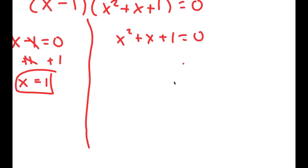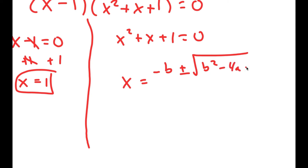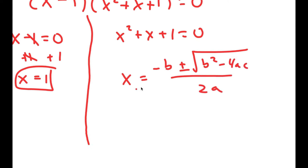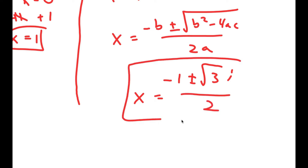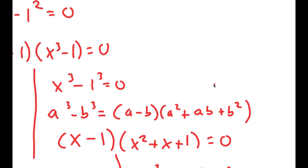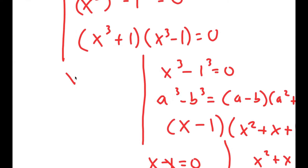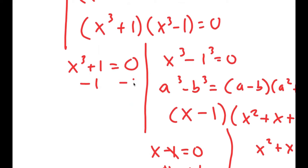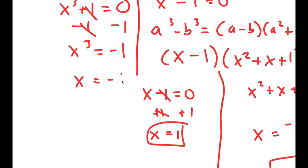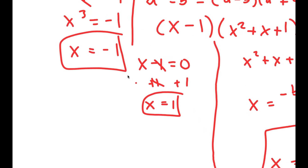For x squared plus x plus 1 equals 0, I can use the quadratic formula. By using it, I get x is equal to negative 1 plus or minus the square root of 3i over 2, so these are two more solutions. Now we aren't done yet because we also have to solve the remaining equations. For x to the power of 3 plus 1 equals 0, I subtract 1 on both sides, so I get x to the power of 3 is equal to negative 1, meaning x is also equal to negative 1. So this is another solution.